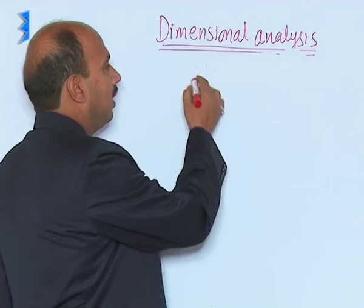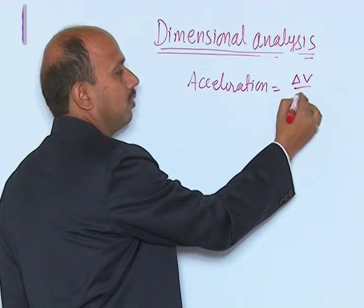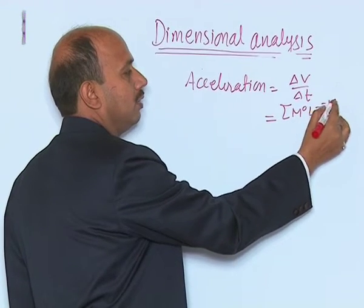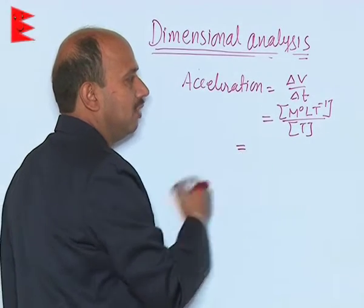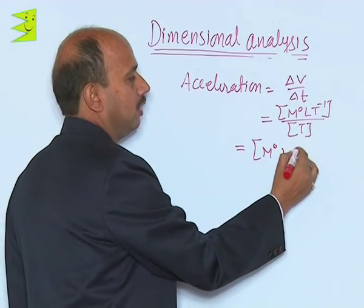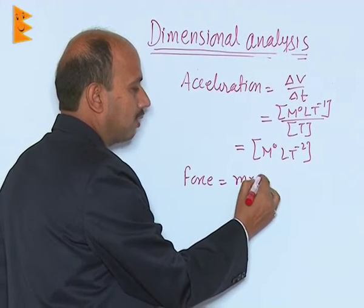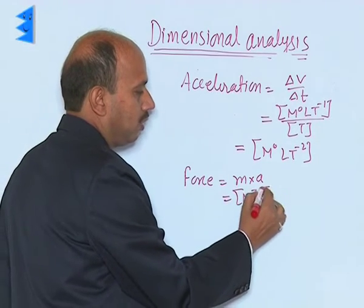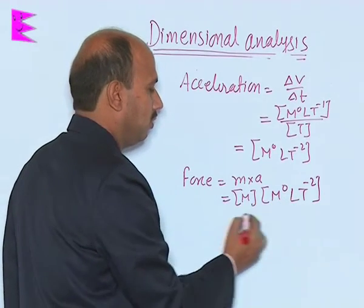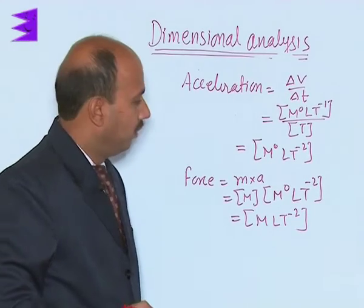We can write the dimensional formula for acceleration. Acceleration is change in speed divided by time. Speed is M⁰ L T⁻¹ divided by T, so acceleration is M⁰ L T⁻². The dimensional formula of force is mass times acceleration, which gives M × M⁰ L T⁻² = M L T⁻². This is the dimensional formula of force.